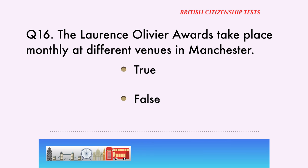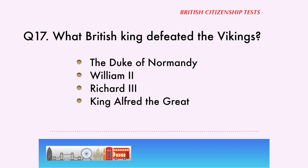Question 16. The Laurence Olivier Awards take place monthly at different venues in Manchester. True or False? The correct answer is: False. The Laurence Olivier Awards take place annually at different venues in London.